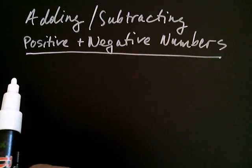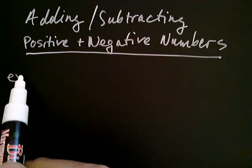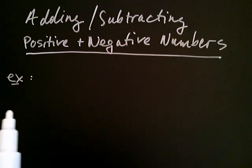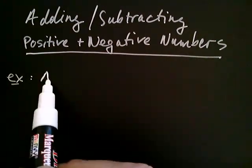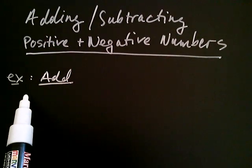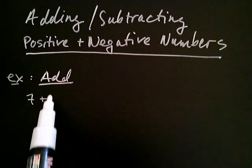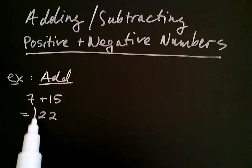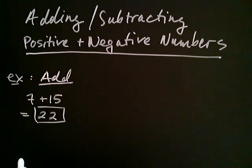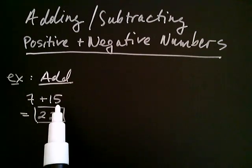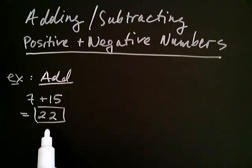First, thinking about adding two numbers. It's clear how to proceed if we're adding two positive numbers together. If somebody asks us to add seven to 15, we know that's equal to 22. One way to think about it is: if I had seven dollars and I added it to 15 dollars, I have 22 dollars.